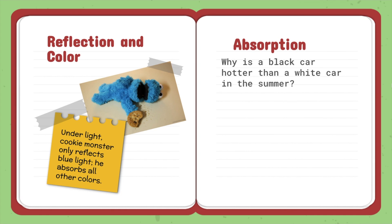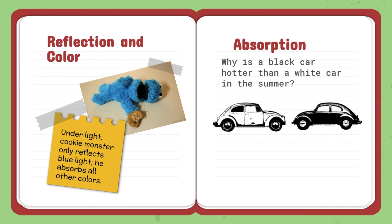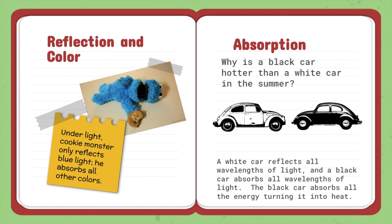So why is a black car hotter than a white car in the summer? A white car reflects all wavelengths of light. And a black car absorbs all wavelengths of light. The black car absorbs all the energy, turning it into heat. That's why it's hotter.